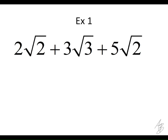What do we do to simplify this expression? That's the direction we're going to give you: simplify this expression. What do you think, Seth? Add them all up? So Seth is suggesting that we add the 2 and the 3 and the 5 together, and then what do we do with the square root parts? Add those all together too?